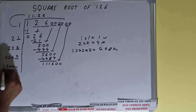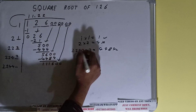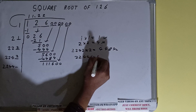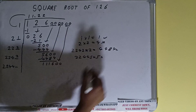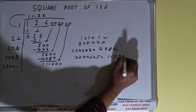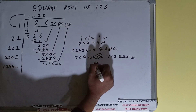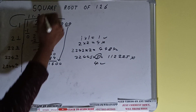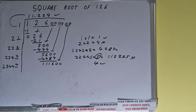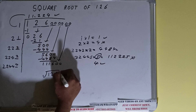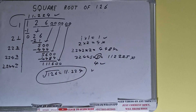Now comparing, we can try five: 22445 times five gives 112225, which is bigger than the number so we cannot use it. Four will surely work — four here and four here. But we don't need to calculate further because we already have our answer correct up to three decimal places. The square root of 126 is 11.224.